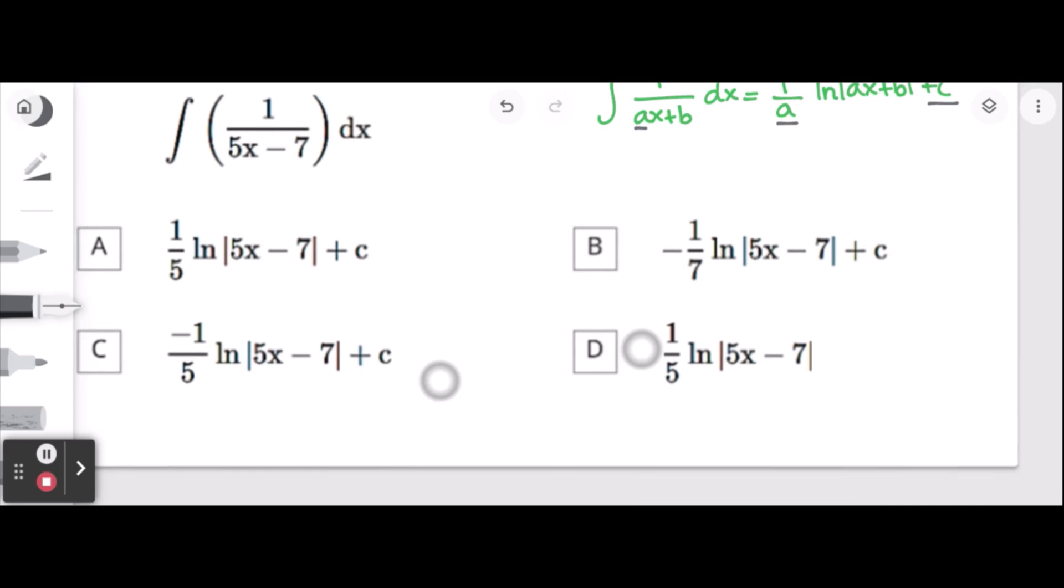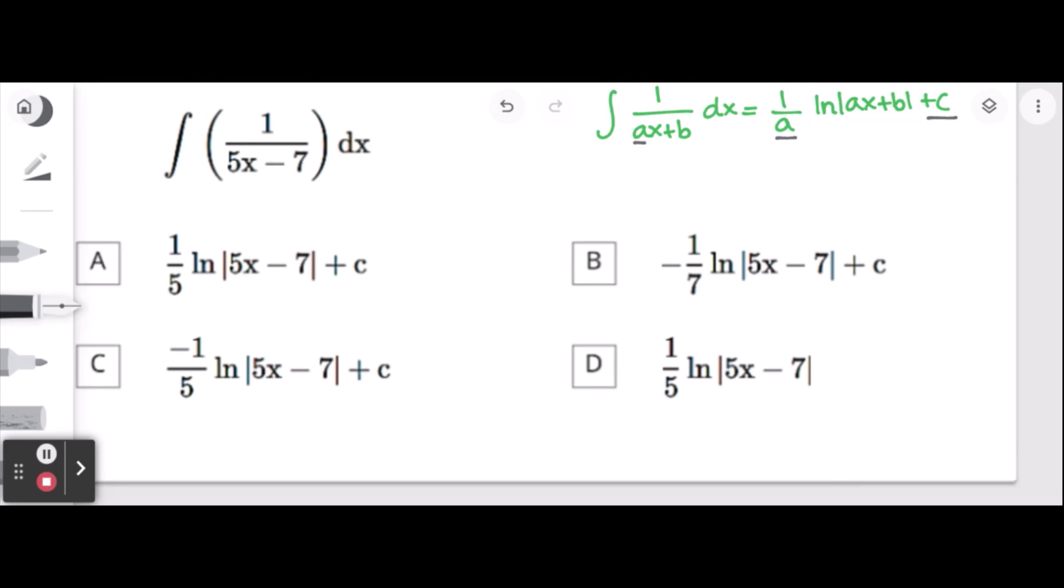Let's solve it together. Equals to 1 over a. A here is 5 which is the coefficient of x, so 1 over 5.